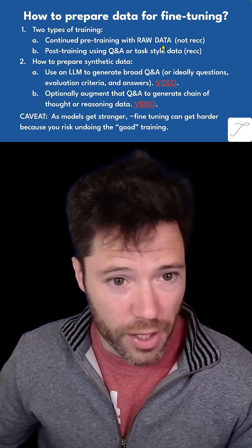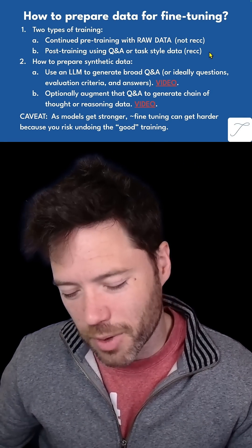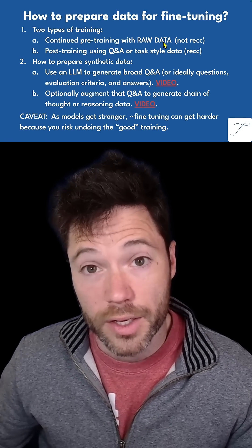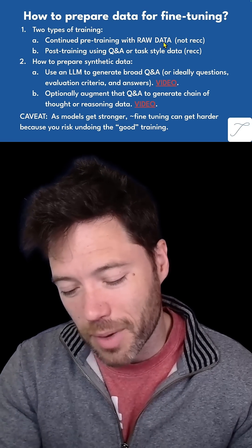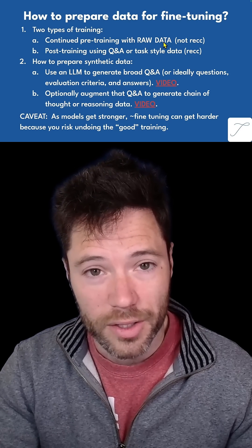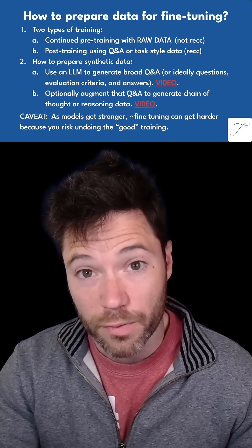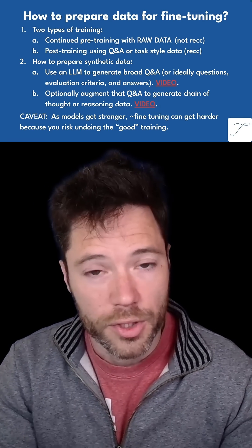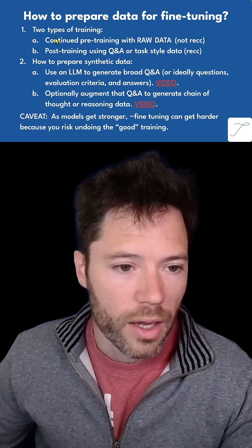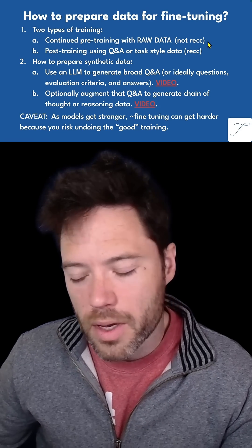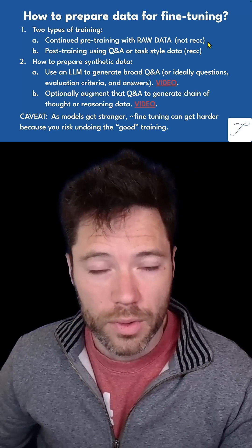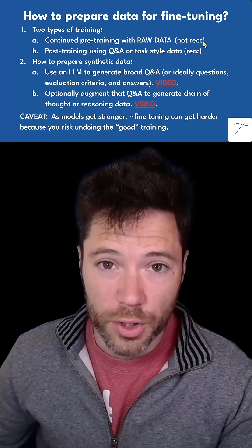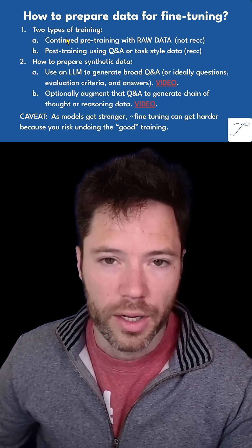Basically, there are two types of training and two types of datasets correspondingly at a very simple level. There is what's called continued pre-training with raw data. This is where you take magazine content, newsletter articles, or books, and you feed that in without much pre-processing — you'll clean it up, but you're not going to change it into Q&A pairs. Typically this is difficult to do on top of an existing model because it can tend to undo the instruction-type training that a model has.